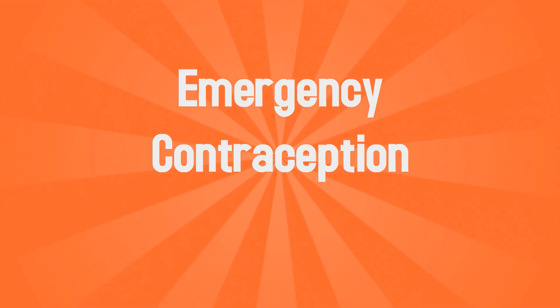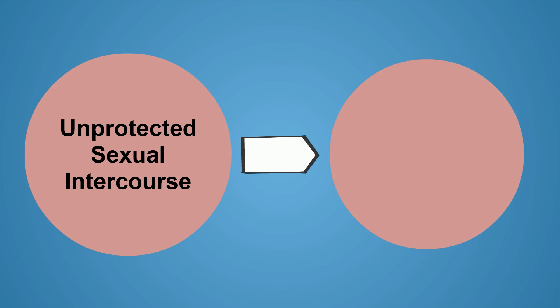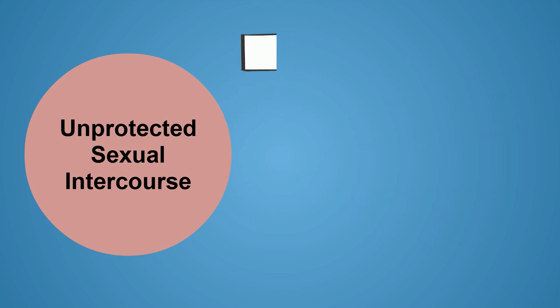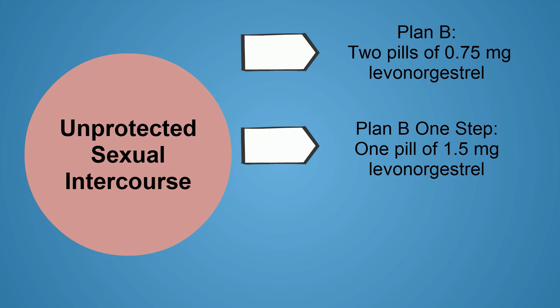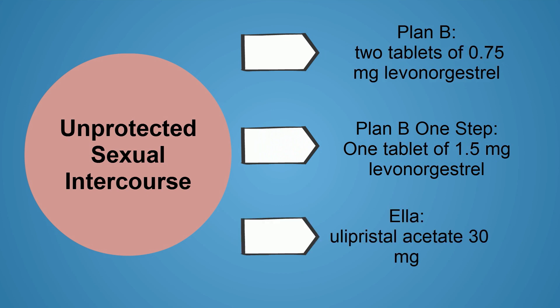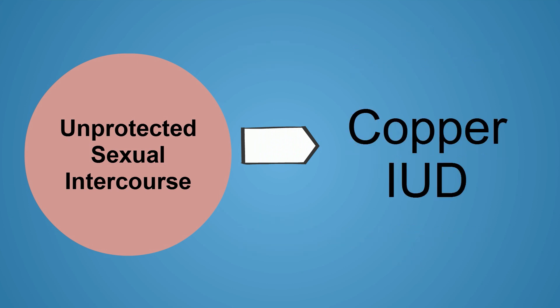Emergency contraception may be used after unprotected sexual intercourse. The mechanisms of action are preventing ovulation and fertilization. Plan B involves two pills of 0.75 mg of levonorgestrel; Plan B One Step consists of one pill of 1.5 mg of levonorgestrel. Ideally these should be taken within 72 hours of unprotected intercourse, but can be taken up to 120 hours after. The failure rate for Plan B is 1.1%. A prescription-only formulation, Ella, uses the selective progesterone receptor modulator ulipristal acetate 30 mg and can also be used up to 120 hours after unprotected intercourse. The copper IUD can also be used as emergency contraception and has a failure rate of approximately 0.1%.